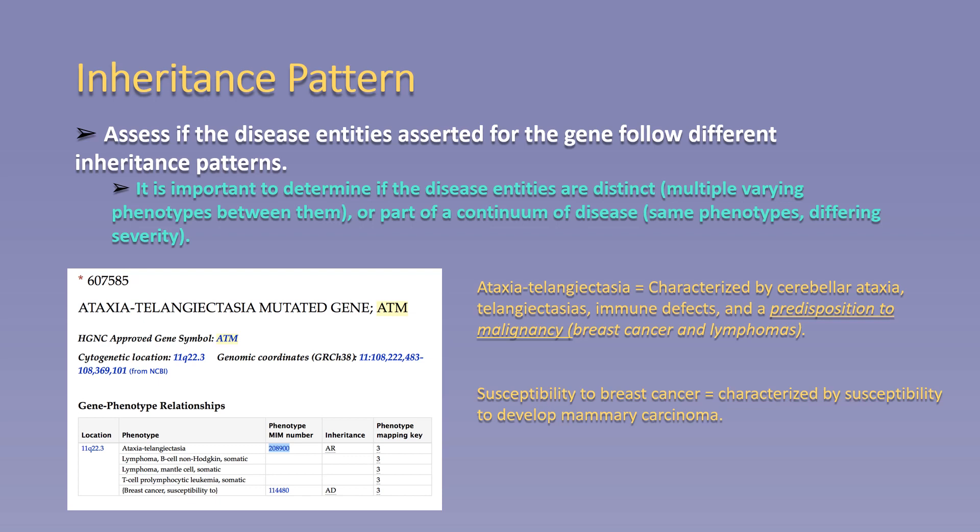The fourth and final criteria is inheritance pattern. Curators should assess if there are differences in the inheritance pattern between the disease entities. It is important to determine if the disease entities are distinct, in which multiple varying phenotypes exist between them, or rather that they are part of a continuum of disease in which the same phenotype is present with differing severity.